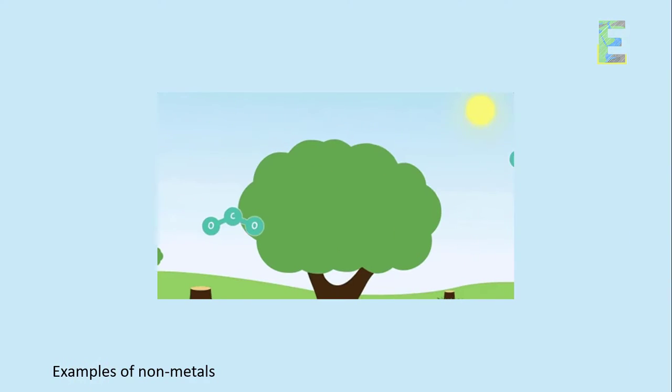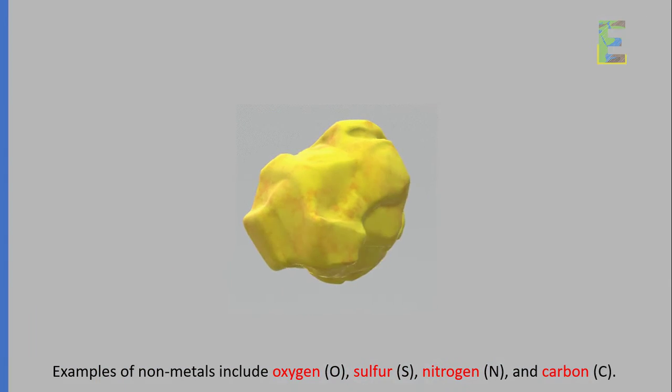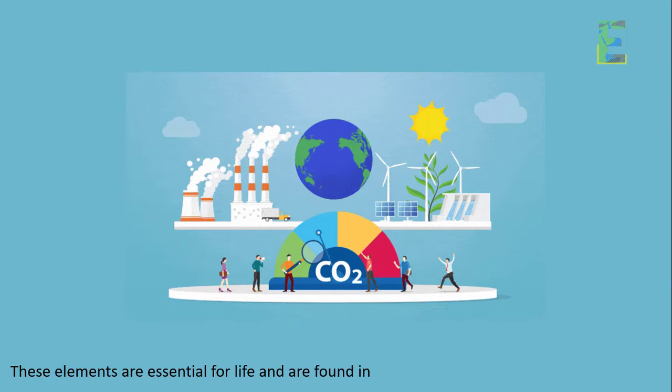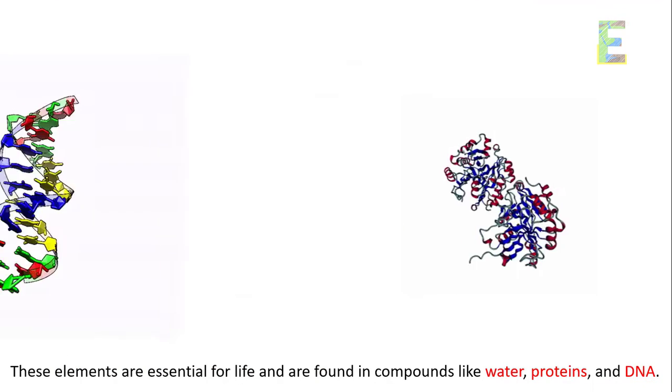Examples of non-metals. Examples of non-metals include oxygen (O), sulfur (S), nitrogen (N), and carbon (C). These elements are essential for life and are found in compounds like water, proteins, and DNA.